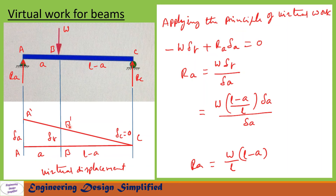Now let us write the virtual work equation. Minus W times delta_b — the minus sign is because W is acting vertically downwards and delta_b is in the upward direction. Plus Ra times delta_a equals zero, since Ra is acting vertically upwards and displacement is also in the vertically upward direction. So the virtual work equation is: minus W times delta_b plus Ra times delta_a equals zero.